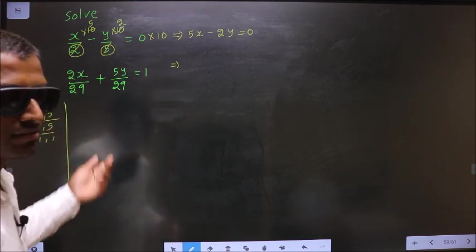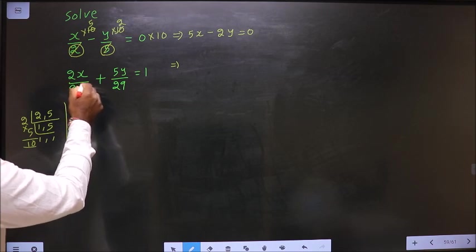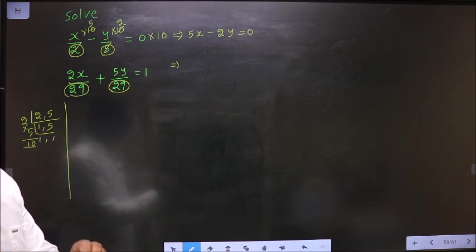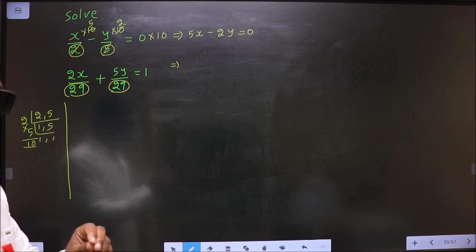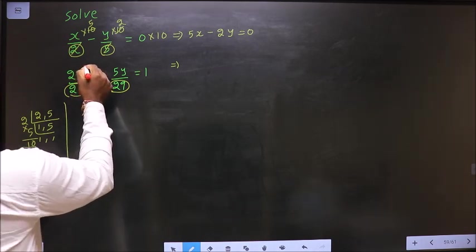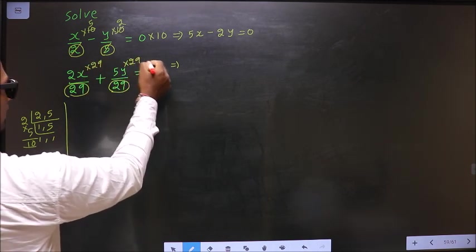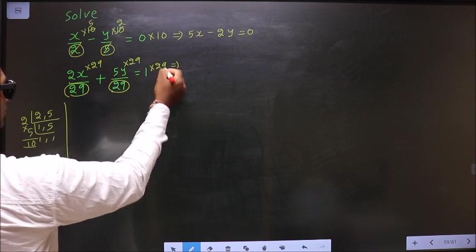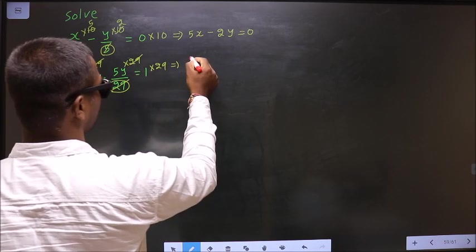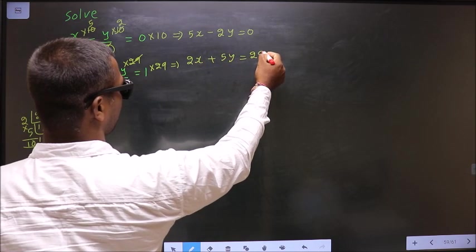Now here, the denominator is only 29. So to get rid of the denominator, I should multiply with 29 to each term. So into 29, into 29, into 29. So this cancel out, I get 2x plus 5y equal to 29.